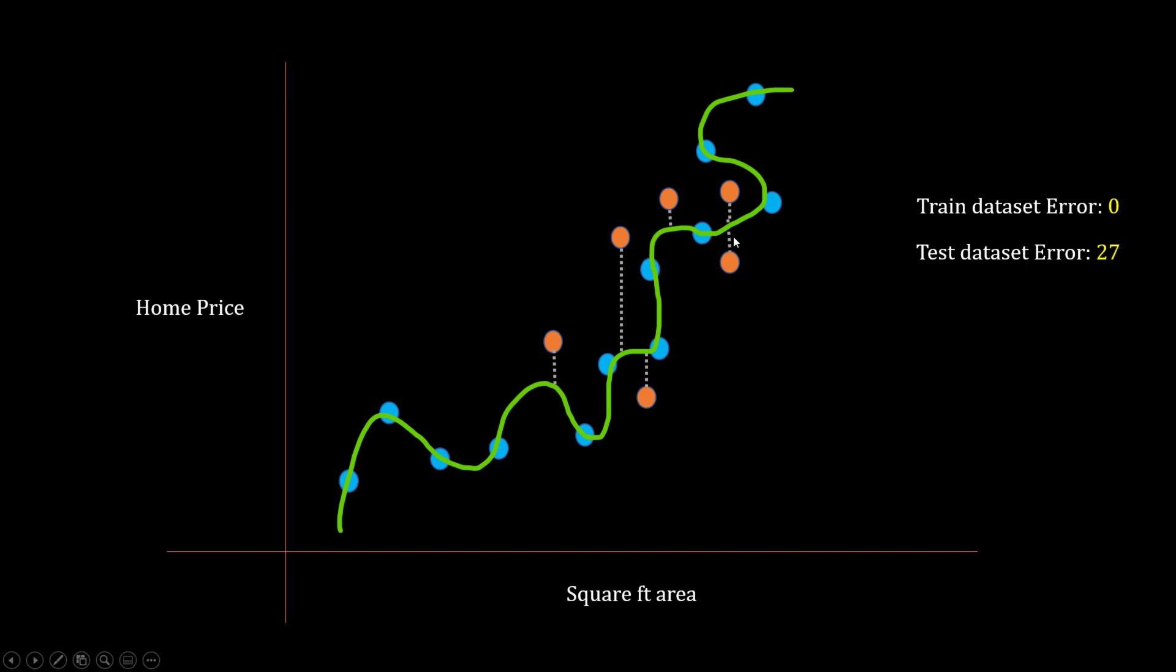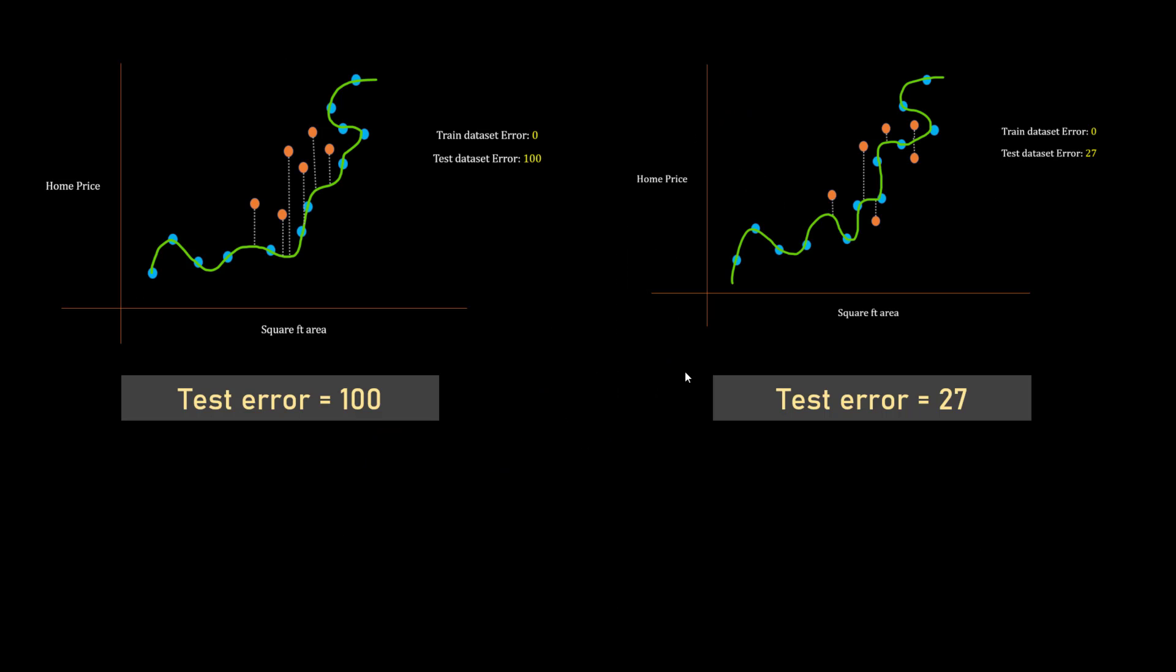If you compare these two scenarios side by side, in one case your test error is 100, second case test error is 27, which means the test error varies greatly based on your selection of training data point. This is called high variance because there is a high variability in the test error based on what kind of training samples you are selecting.